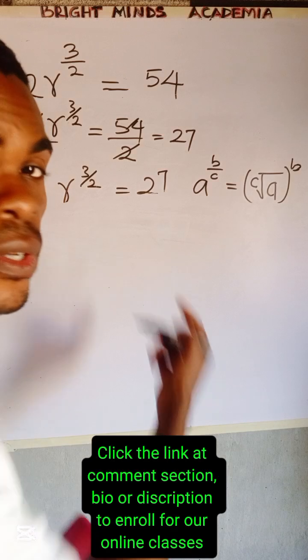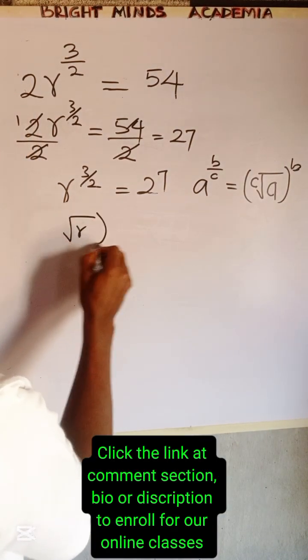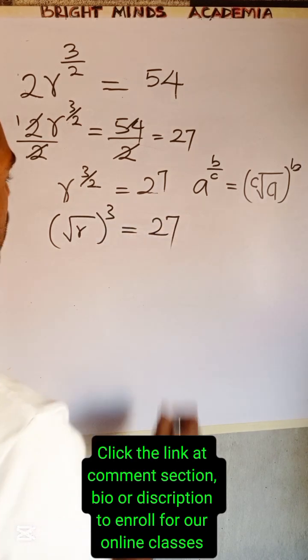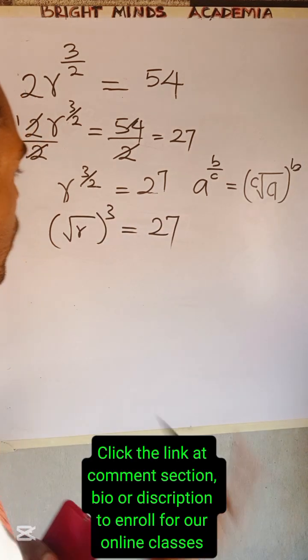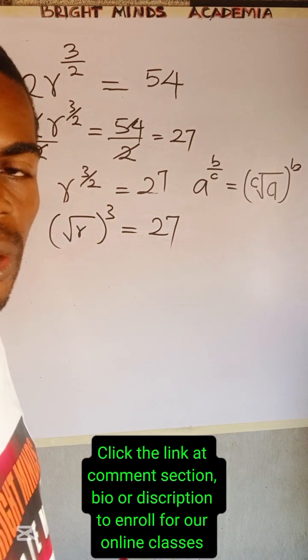So we're going to have square root of r all to the power of 3 is equal to 27. Now notice we have to remove the power of 3 for us to make r stand alone.